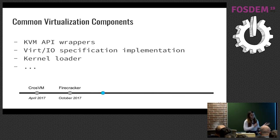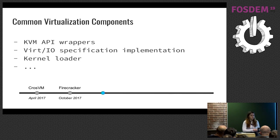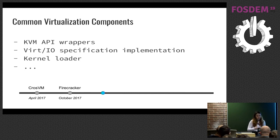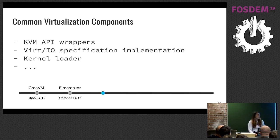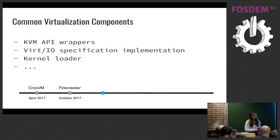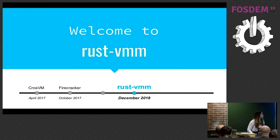They're different, but there are still some common virtualization components. Because they're both built on top of KVM, they share KVM API wrappers. They both have block device and network device implementations following a similar spec. And because they're both lightweight VMs, they have a minimal kernel loader, among other shared components. Going back to the motorcycle analogy, we now have two motorcycles — but if somebody wants to build a third motorcycle, there's no good way to do that. They would have to either fork one of the projects or start from scratch. This is where rust-vmm comes into place.